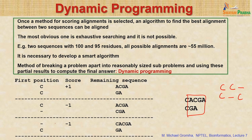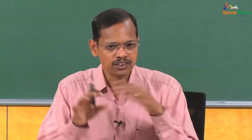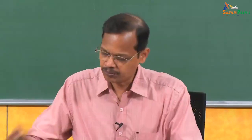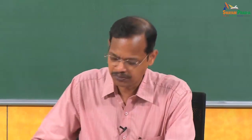The third option is if you put a gap in the first sequence, we did not use any nucleotide from the first sequence so it remains as is, while the second sequence used C, leaving GA. You can continue in this manner, score each step appropriately, and finally add all the scores together to see what gives the best alignment.